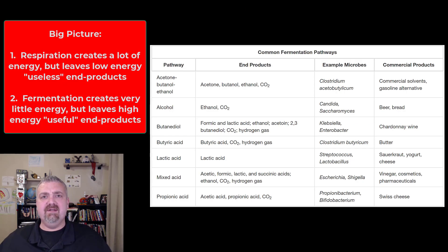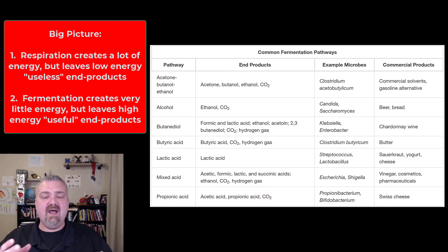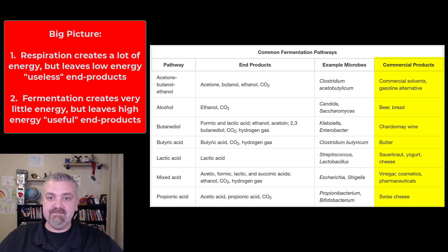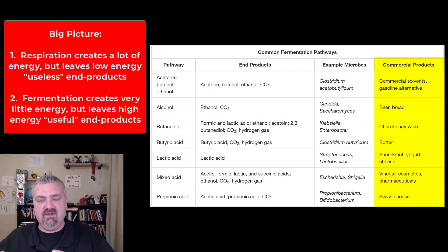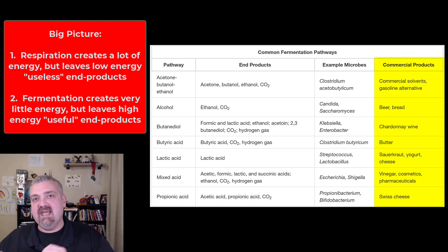The last key thing to note is where does the energy go? When we fully oxidize glucose through aerobic respiration, we've taken all the energy — we generated those 36 or 38 ATP through oxidative phosphorylation, leaving low energy or useless end products. Fermentation takes only a tiny bit of energy away, which means the end products still have the energy. Respiration leaves useless end products; fermentation leaves useful end products.